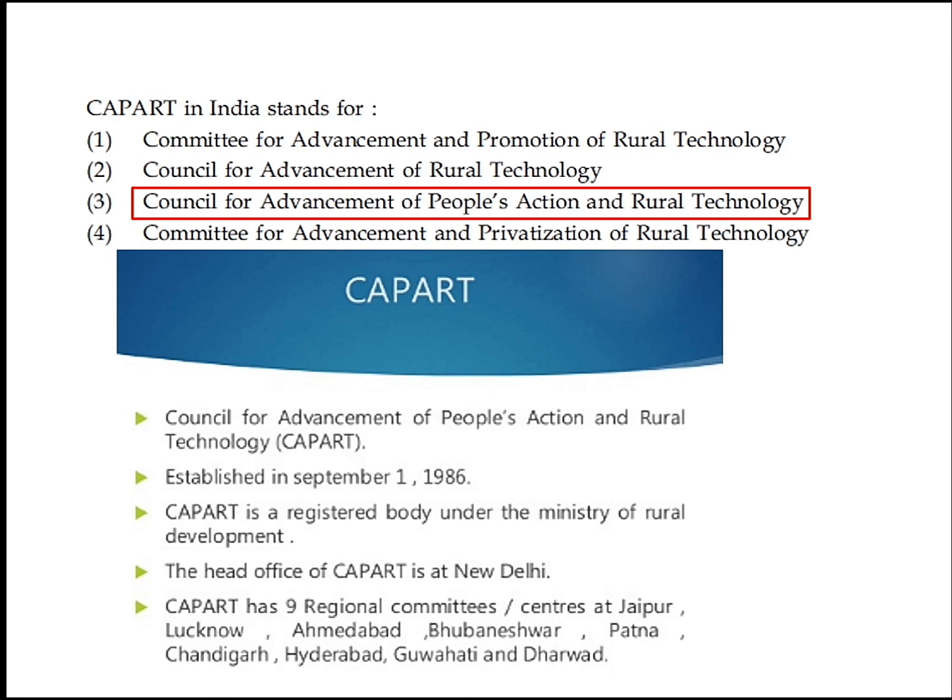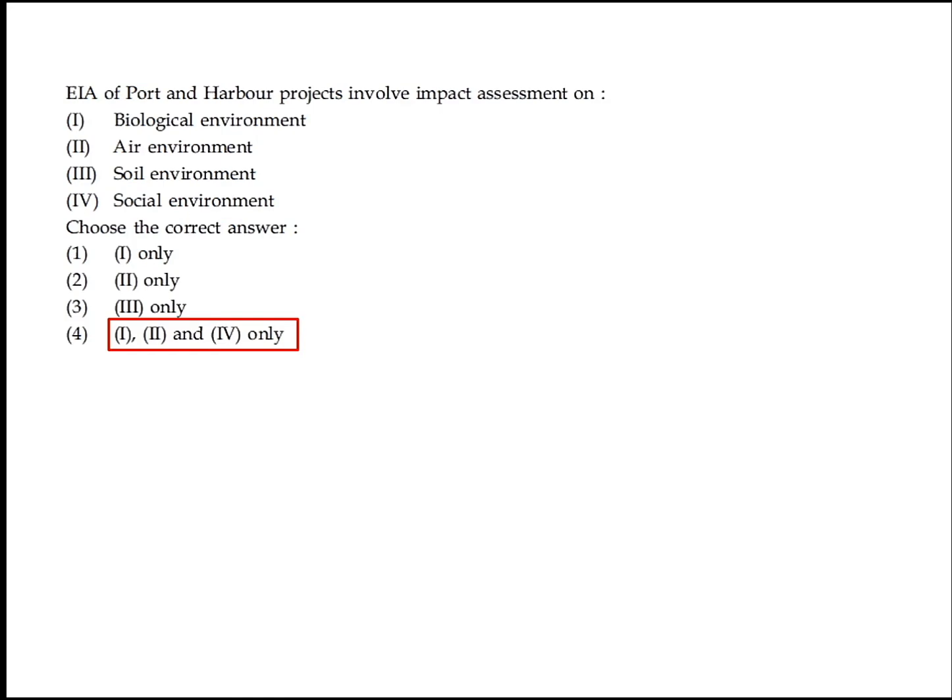CAPART stands for Council for Advancement of People's Action and Rural Technology. Option 3 is the right answer. EIA of Port and Harbour Projects involves impact assessment on the biological environment, air environment, and social environment. Option 4 — 1, 2, and 4 only — is the right answer.